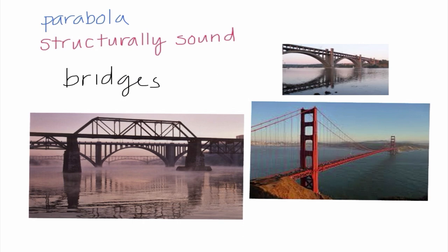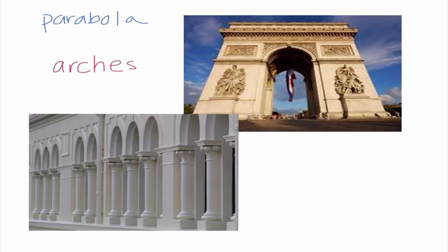We also see them in a lot of buildings. Like here's the Arc de Triomphe, and we can see that we have the parabola shape in there. And here's another picture of a random building. But we can see that there are a ton of archways which are all parabolic in nature. So if you go through and look at just life around you, you are destined to find a ton of parabolas because they are very, very commonly used.